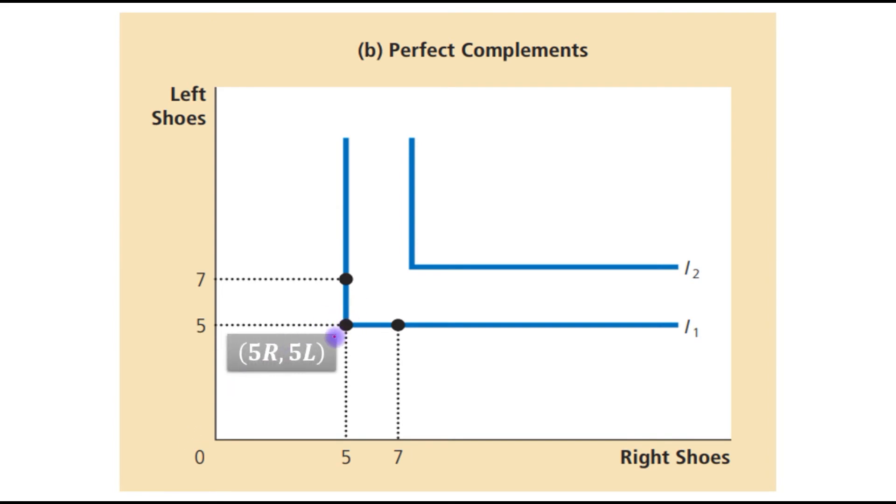Here we have represented the preferences for right shoes and left shoes with indifference curves. A bundle with five right shoes and five left shoes is just as good as a bundle with seven right shoes and five left shoes.